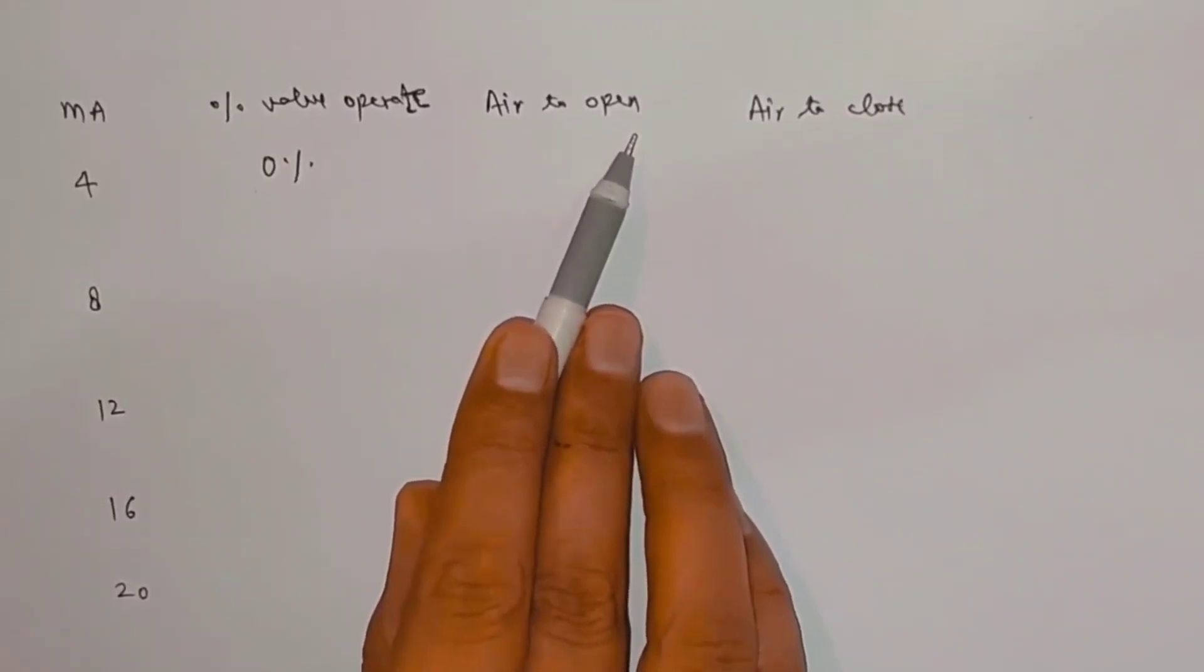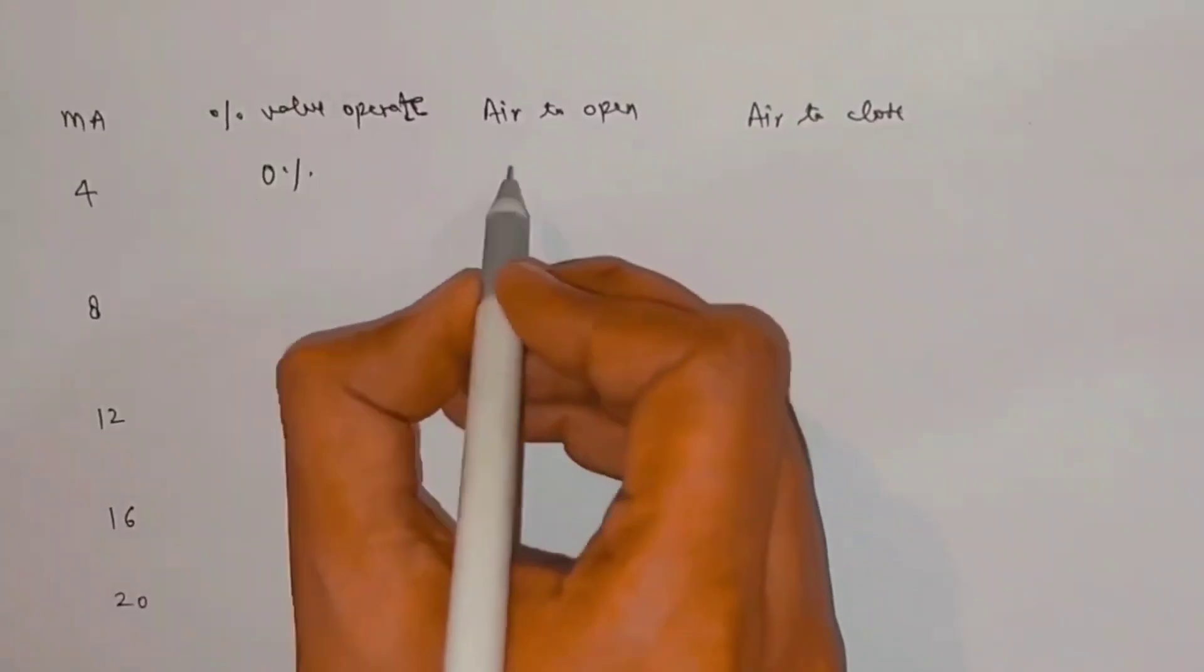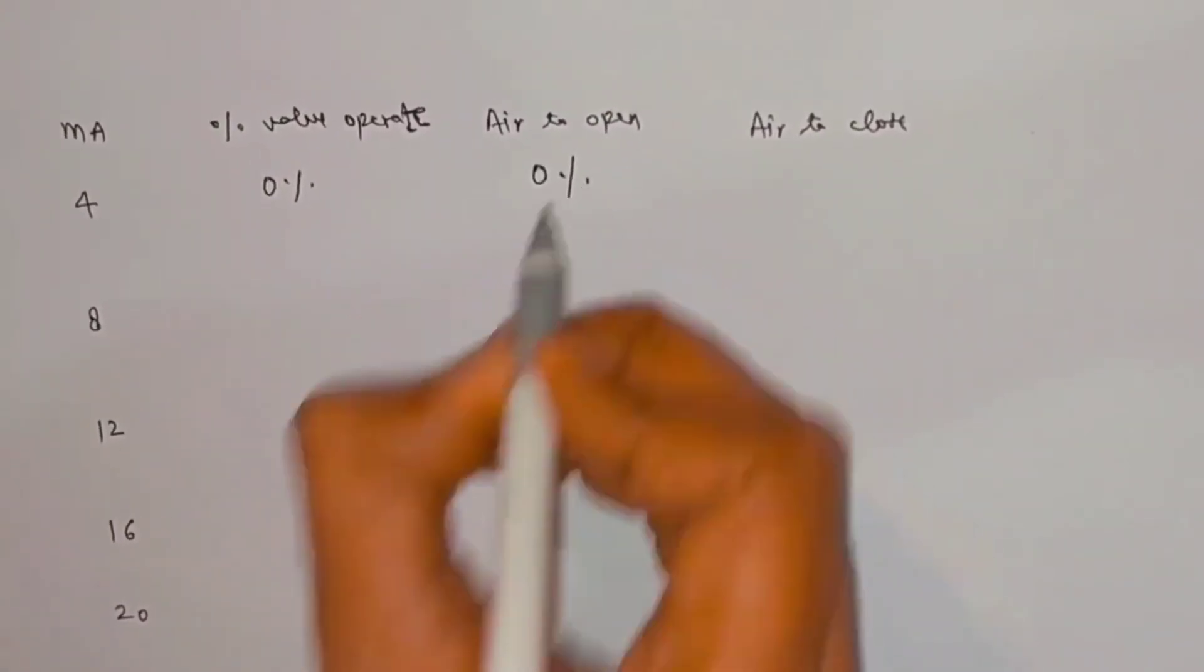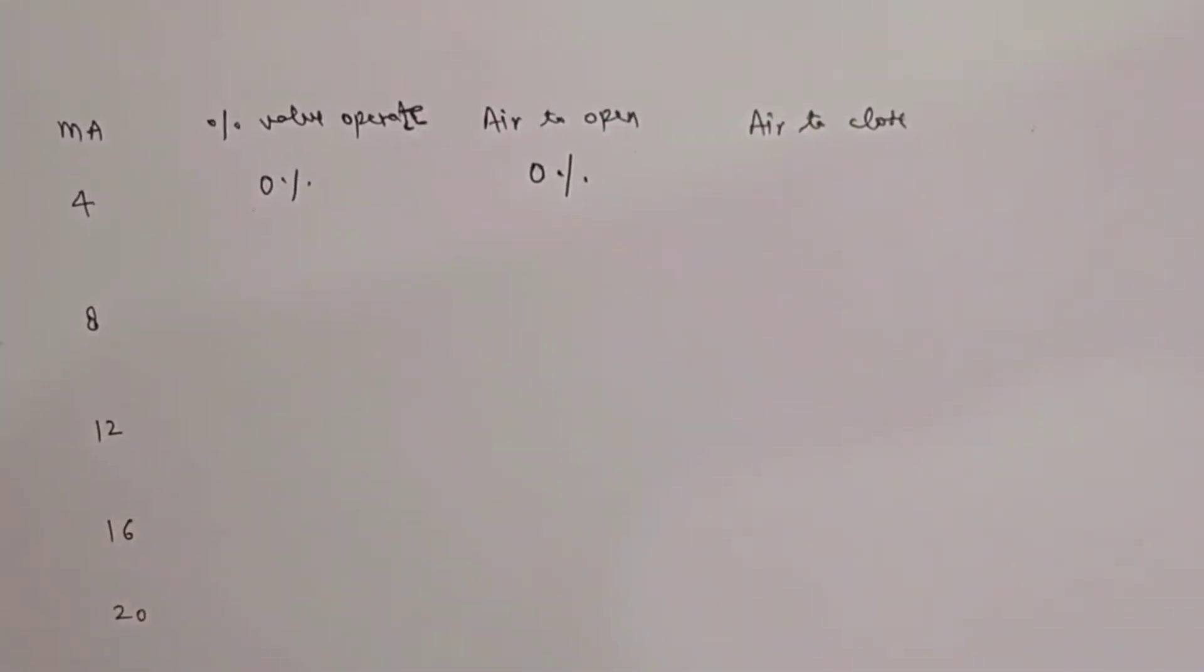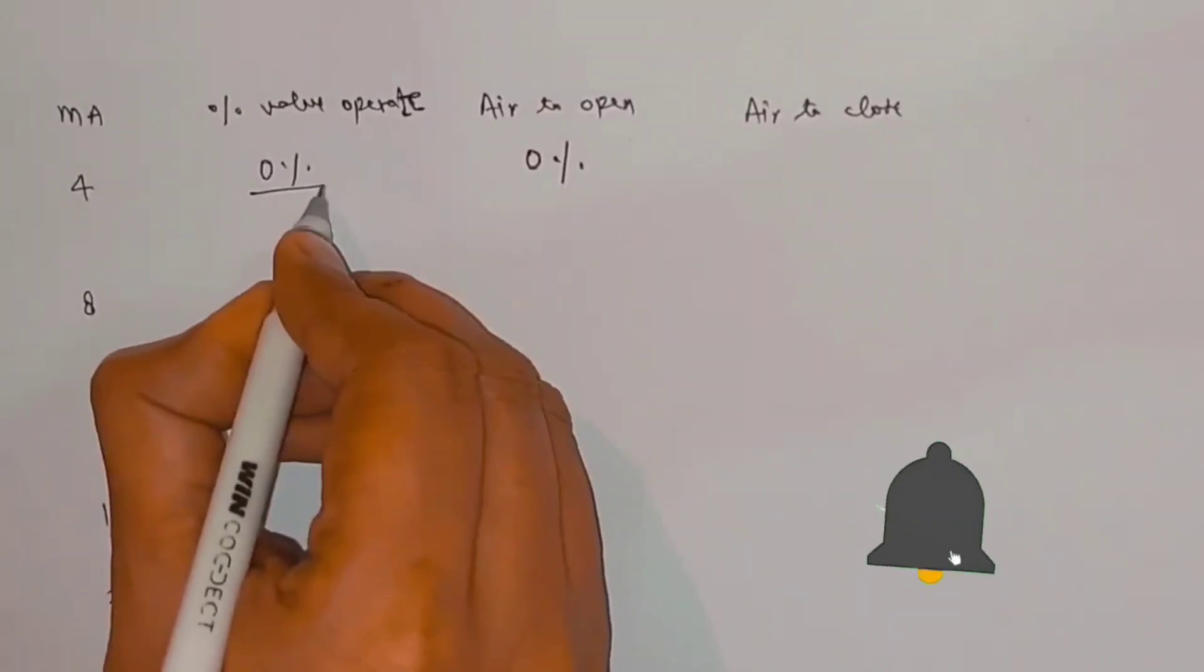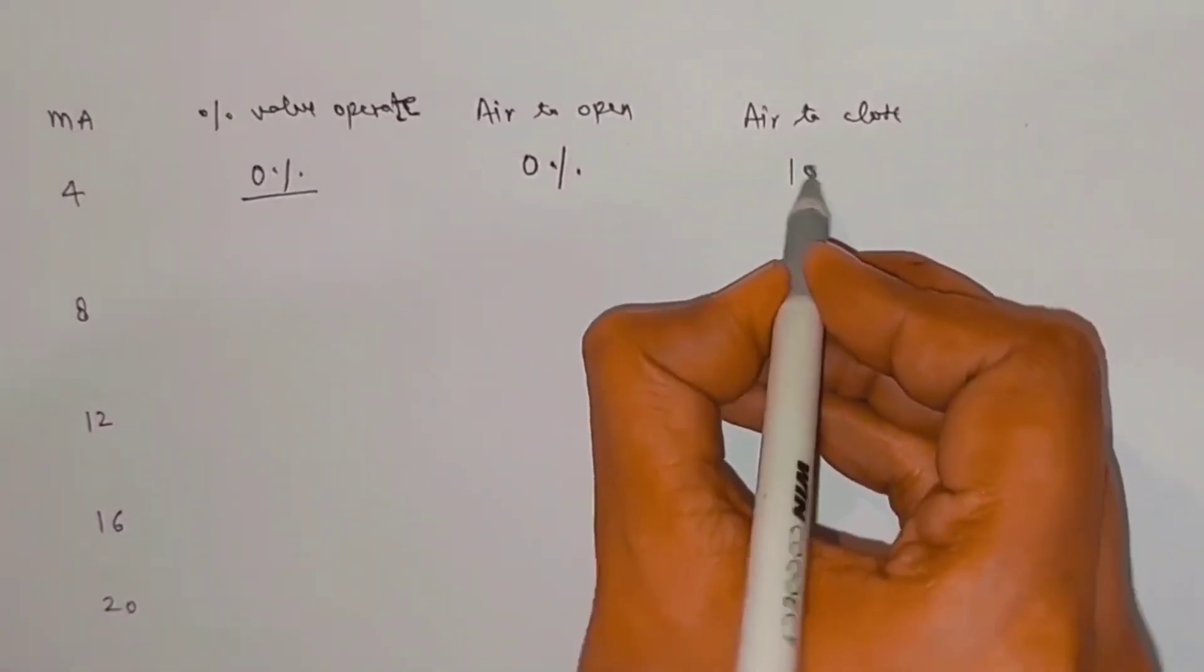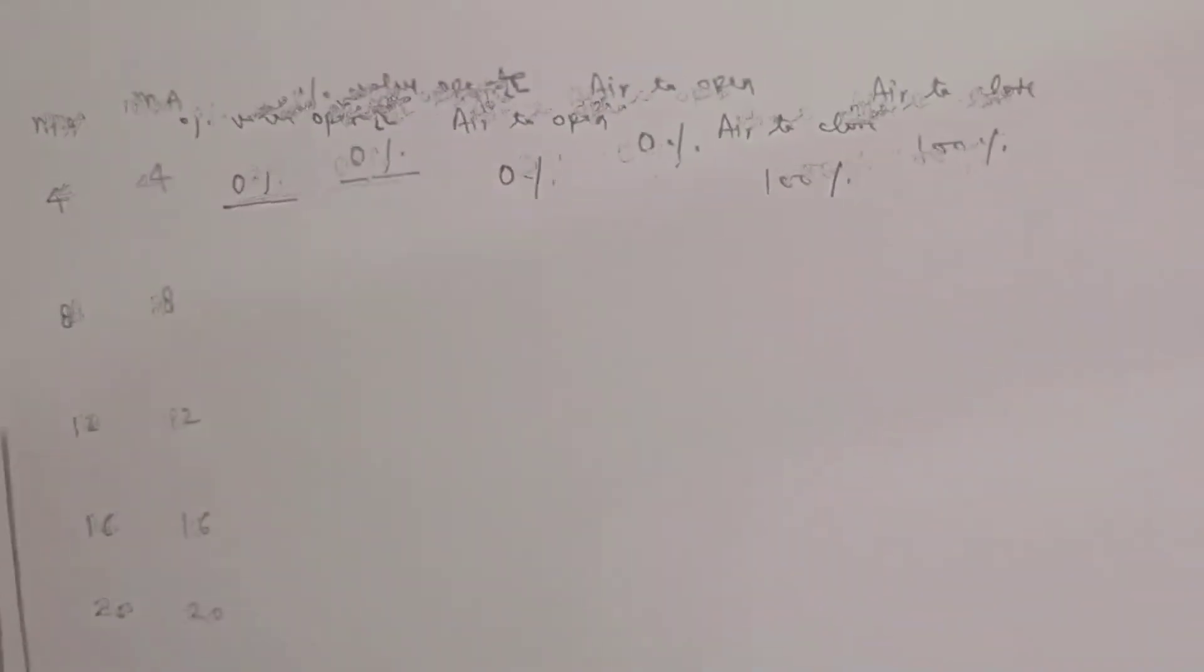When we take air to open control valve and when it will operate 0%, its percentage opening will be 0%. But when we take air to close control valve and it will operate 0%, then its opening percentage will be 100%.